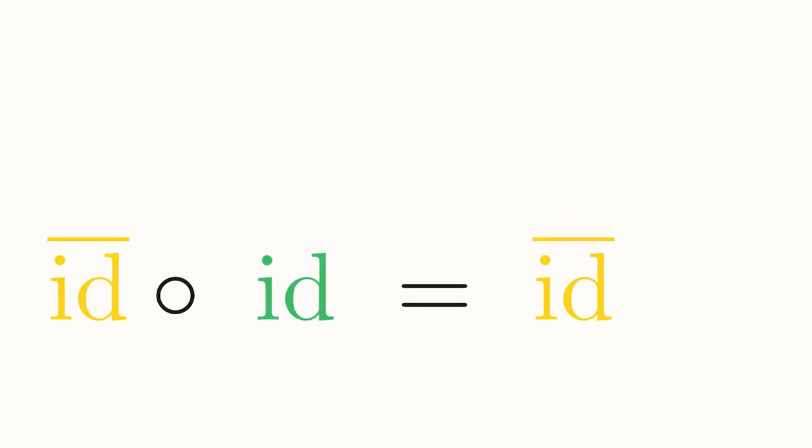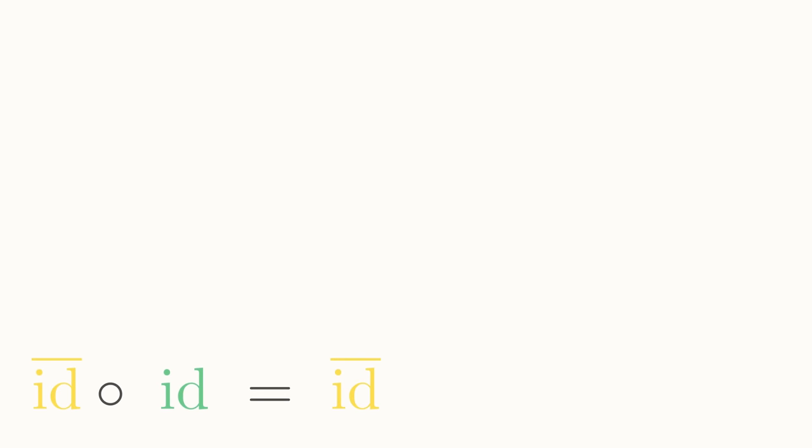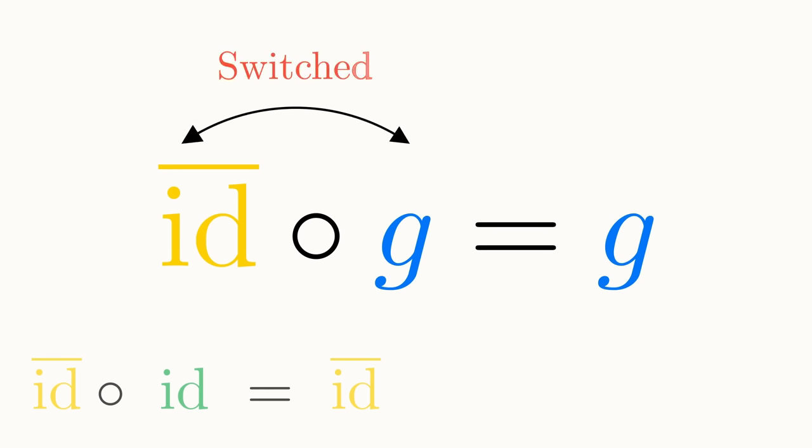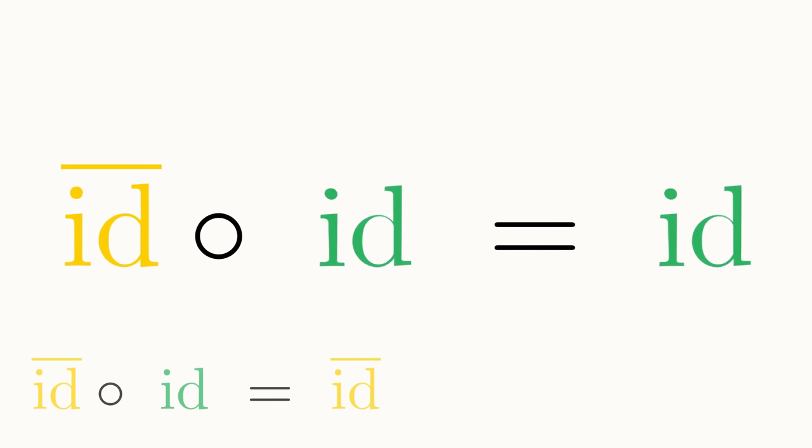Let's put this equation to the side for a moment and consider another one. Since ID bar is also an identity arrow, any given arrow that ends at this object, let's call it G, composed with ID bar, must be itself. Notice that the order of composition has switched here, but the identity arrow being a unit of composition means that it gives back the same arrow when composed before or after any other arrow. Just like before, this equation must be true for any arrow that ends at this object, including our other identity arrow.